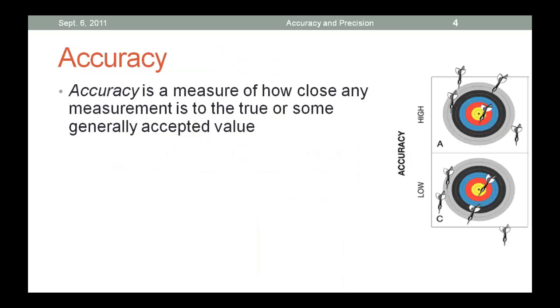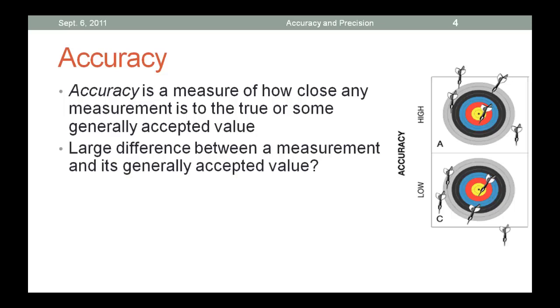Accuracy measures how close a measured value is to the true value or accepted value. Is the speedometer on my car correct or are those flashing lights for me? No. Since a true or accepted value for a physical quantity may be unknown, it is sometimes not possible to determine the accuracy of a measurement. If we have large differences between the measurement and its accepted value, is that considered high accuracy or low accuracy? Low accuracy.